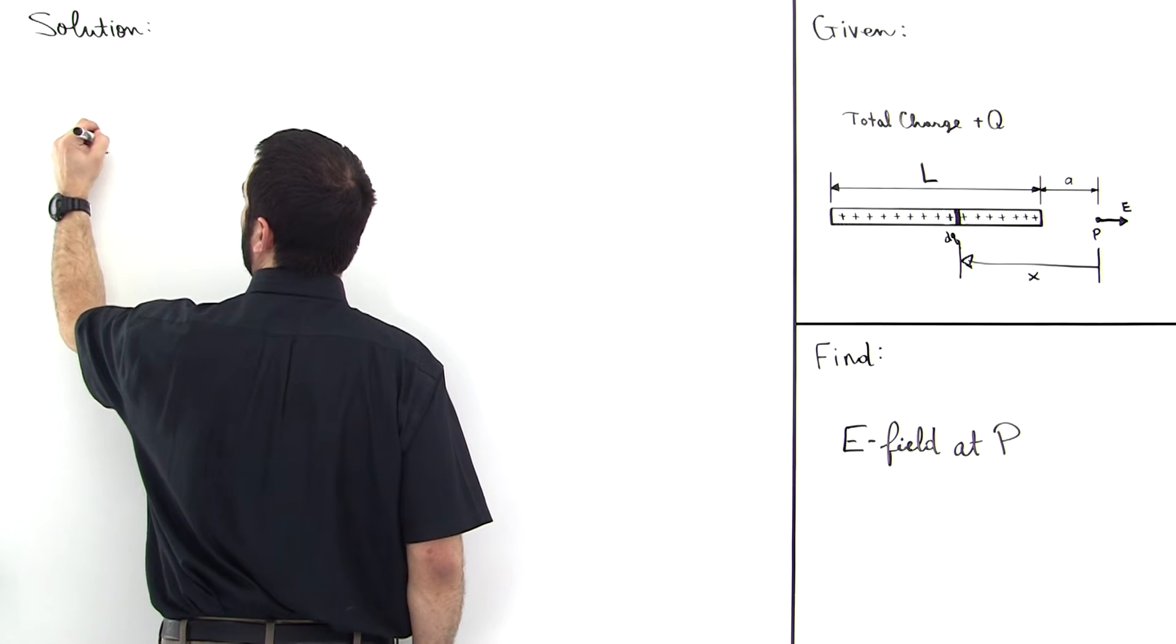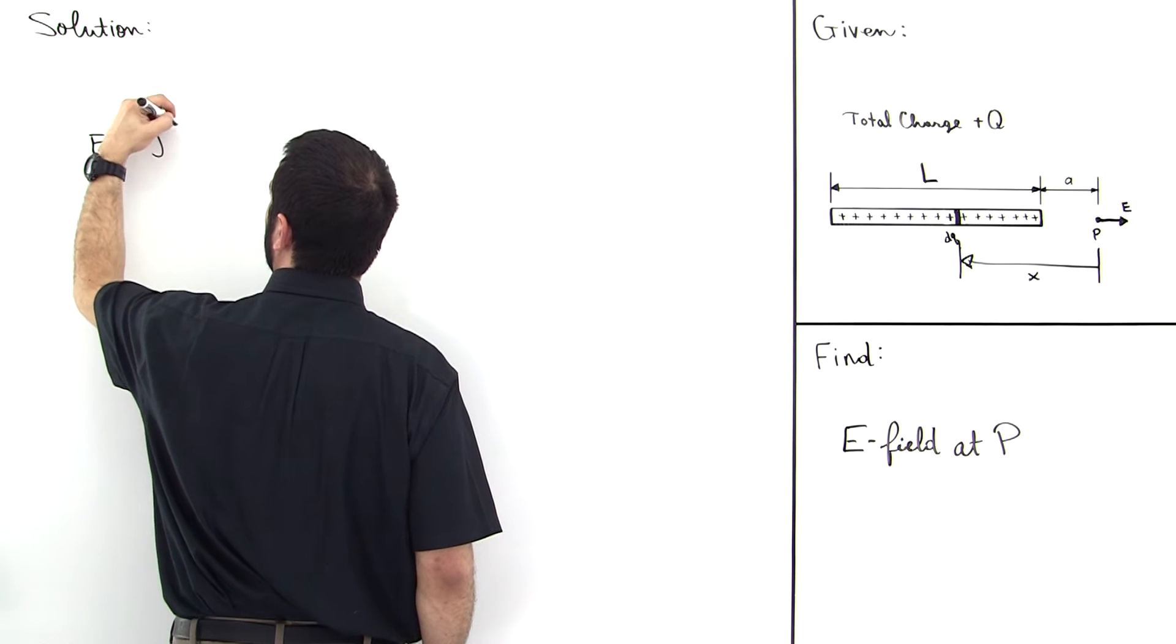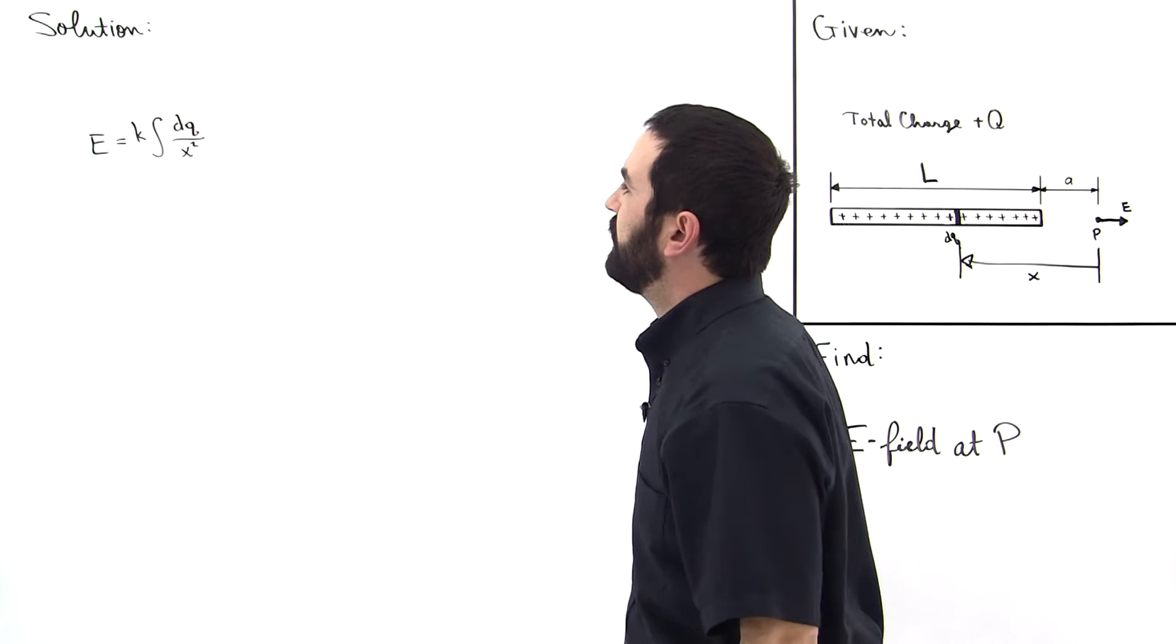In general, we can say the electric field is equal to K times the sum of dQ over X squared, like this.